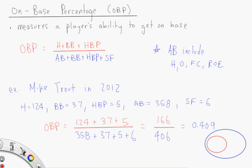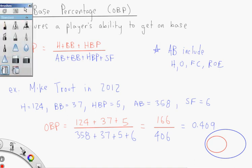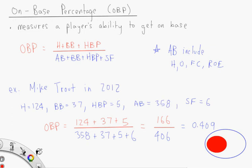So if we color in these values, we see that the numerator can never be larger than the denominator. So OBP always has to have a value less than 1. So I'll write that in.